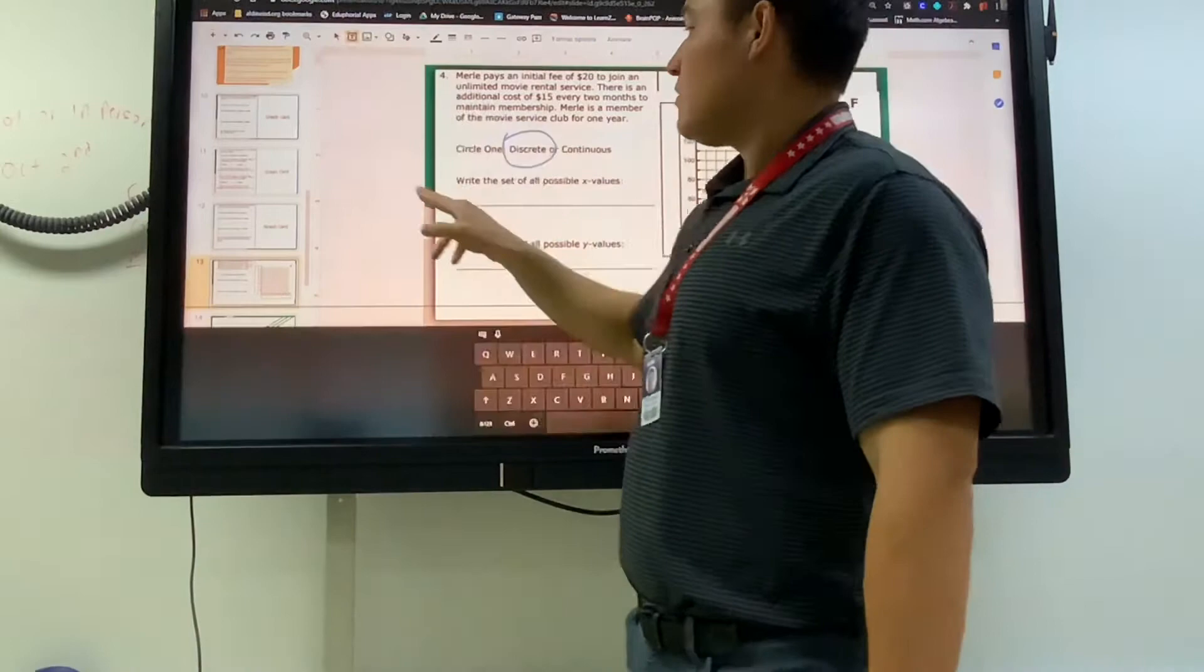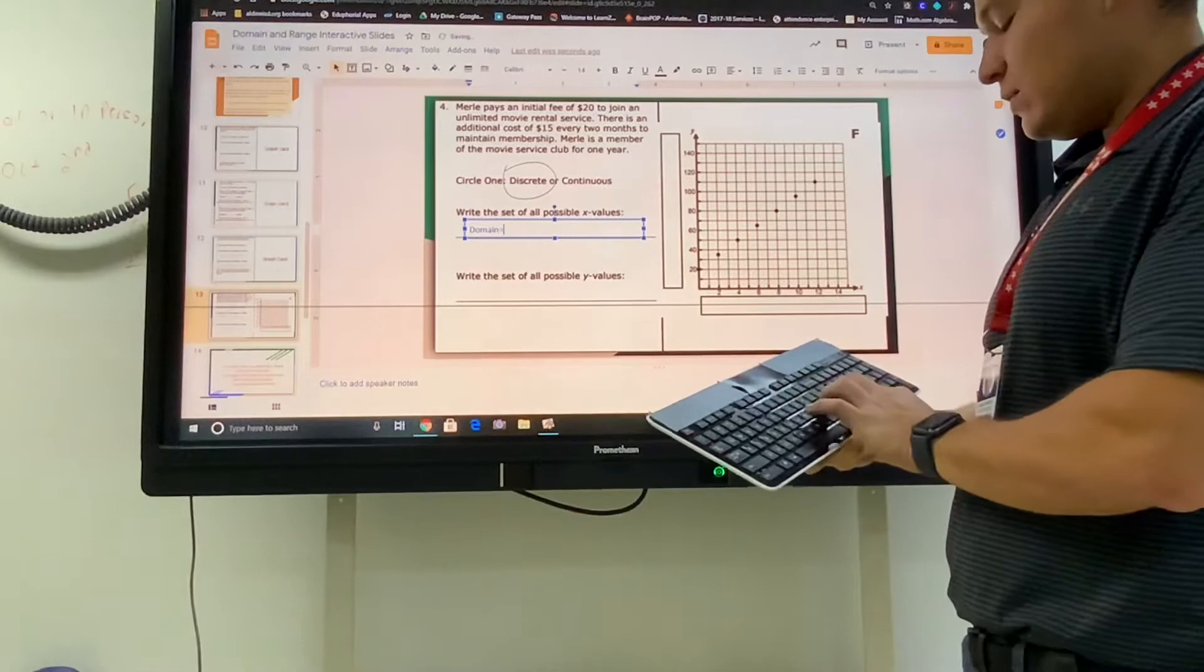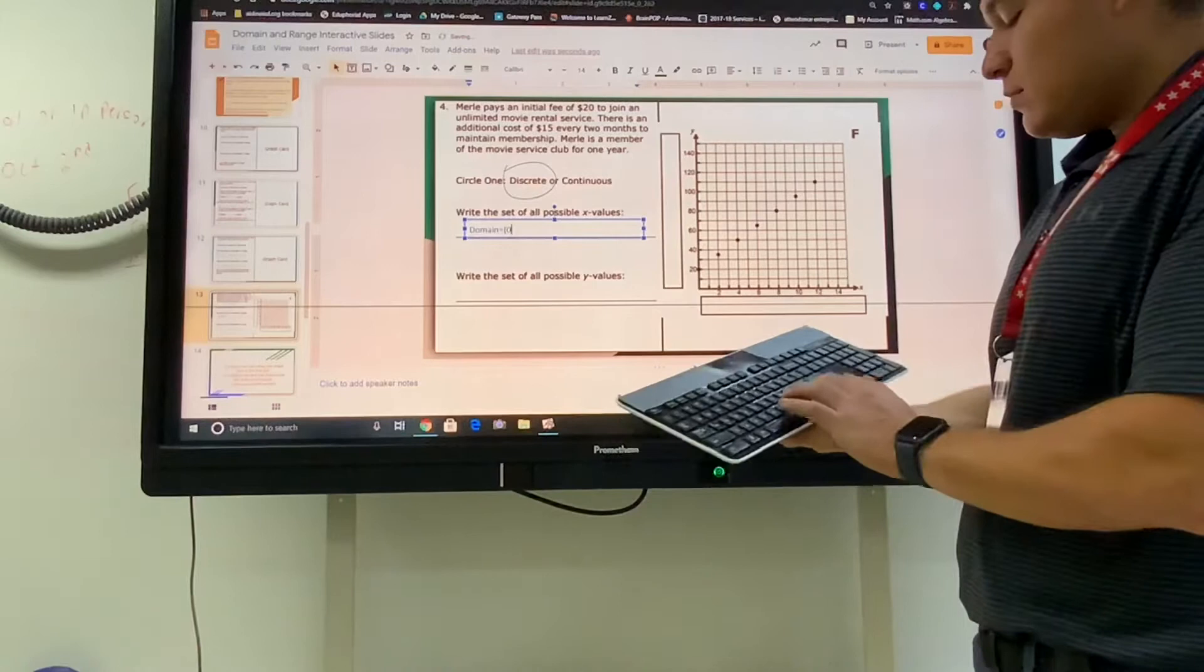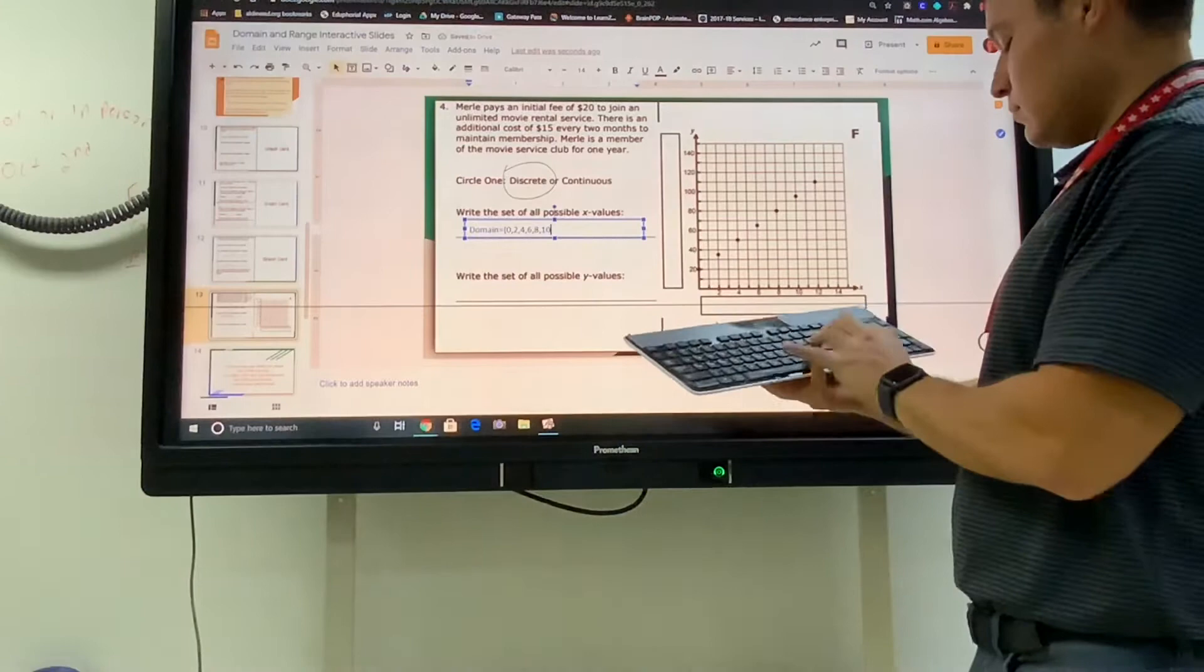And then in the text box we're going to write all possible x values. All possible x's is the domain. So the domain was equal to, and I'm going to use a curly brace. We could be 0, 2, 4, 6, 8, 10, 12 was the last one. Close it.